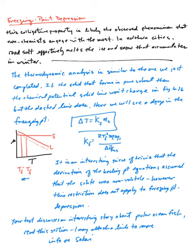If you did the thermodynamic analysis, the derivation would be very similar to the one we just completed. If the solid that forms is pure solvent, then the chemical potential solid line won't change in the figure. I just cribbed a little bit of the figure of chemical potential that was in your textbook, I think it's figure 6.16.